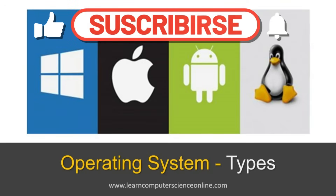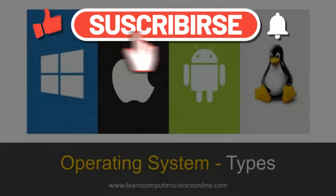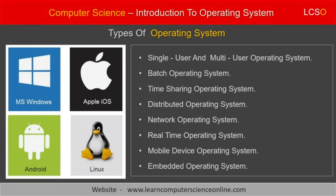Let us now discuss different types of operating systems. Different types of operating systems are used depending upon the user requirements, type of the computing device, and the system configuration. Some important types of operating system include single user and multi-user operating system, batch operating system, time-sharing operating system, distributed operating system, network operating system, embedded operating system, real-time operating system, and mobile device operating system.